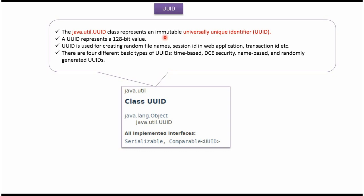UUID class represents an immutable universally unique identifier and UUID represents a 128-bit value. Using UUID class we can create random file names, random session IDs in web applications, and random transaction IDs.